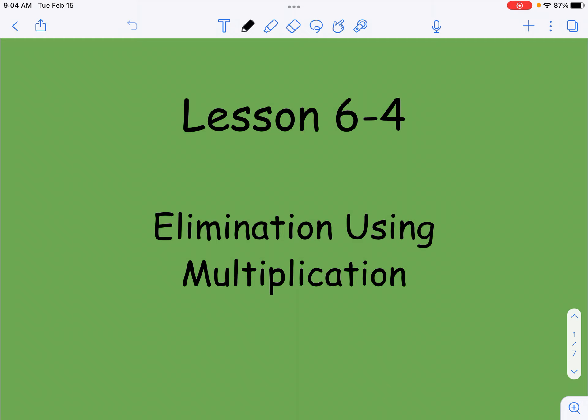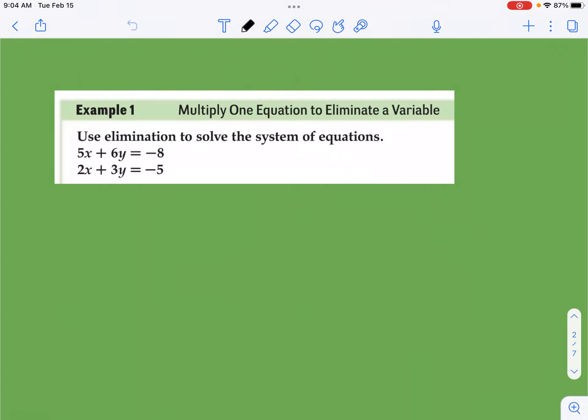We're going to continue to work on solving these equations using elimination. The difference now is that we don't have the same coefficients to work with, like not even where they're exactly the same or where they're additive inverses of each other. We're going to have, you're going to see right away in this first equation, we've got 5x plus 6y equals negative 8, and we've got 2x plus 3y equals negative 5, and you might be thinking, well, nothing lines up, so what do we do?